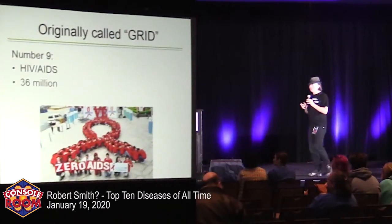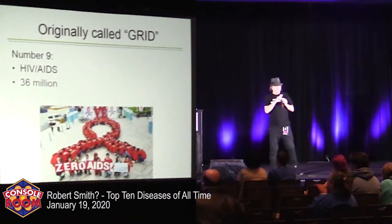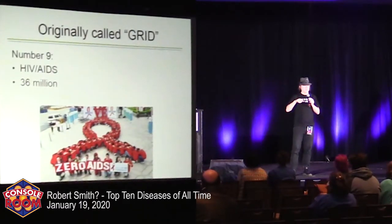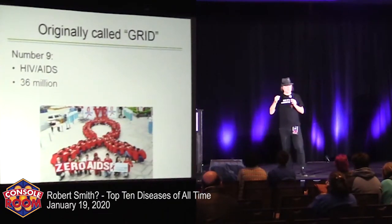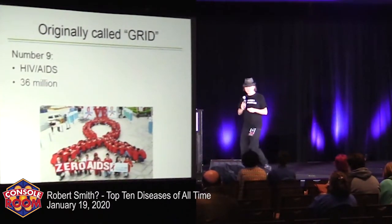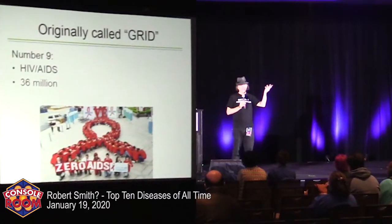HIV/AIDS has killed 36 million people since the 1980s — a lot of people in a very short time. The specific cells that HIV wipes out are the memory cells that communicate between the two sides of the immune system — the cells that tell B cells how to fight new viruses. The immune system has a lot of backups, but not for these memory cells. When they're gone, new things come along and the immune system doesn't know what to do. People started dying of obscure diseases — 13th century flus turning up — which we all normally fight off quietly every day without knowing.